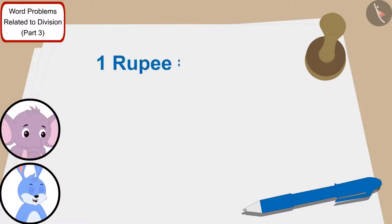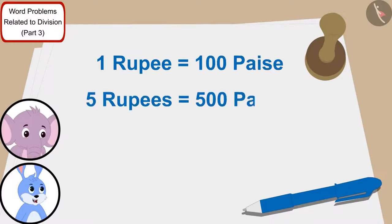And Rs. 1 is equal to 100 paise. So, Rs. 5 is equal to 500 paise. Now, it is very easy. We only have to divide 500 by 25, Bunni said to Appu.